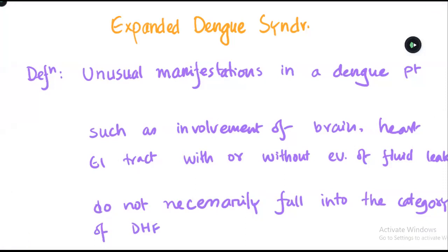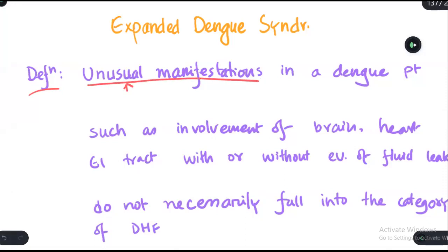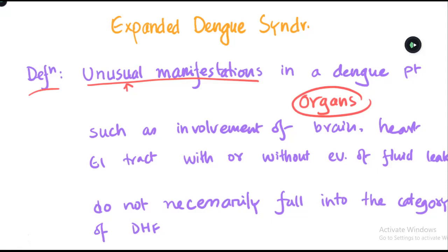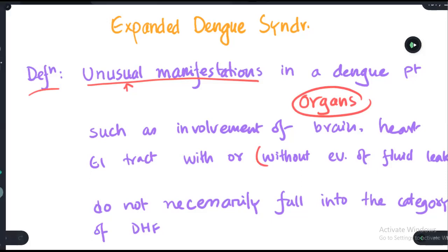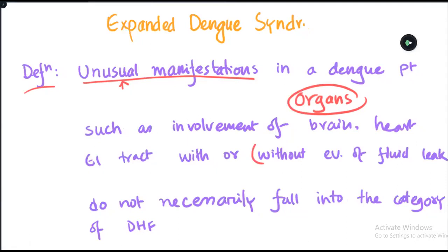Let's talk about the expanded dengue syndrome. What's the definition and what are the expanded dengue syndromes? The expanded dengue syndrome refers to unusual manifestations in a dengue patient, such as involvement of different organs or organ systems — brain, heart, GI tract, and other organs — with or without evidence of fluid leak.